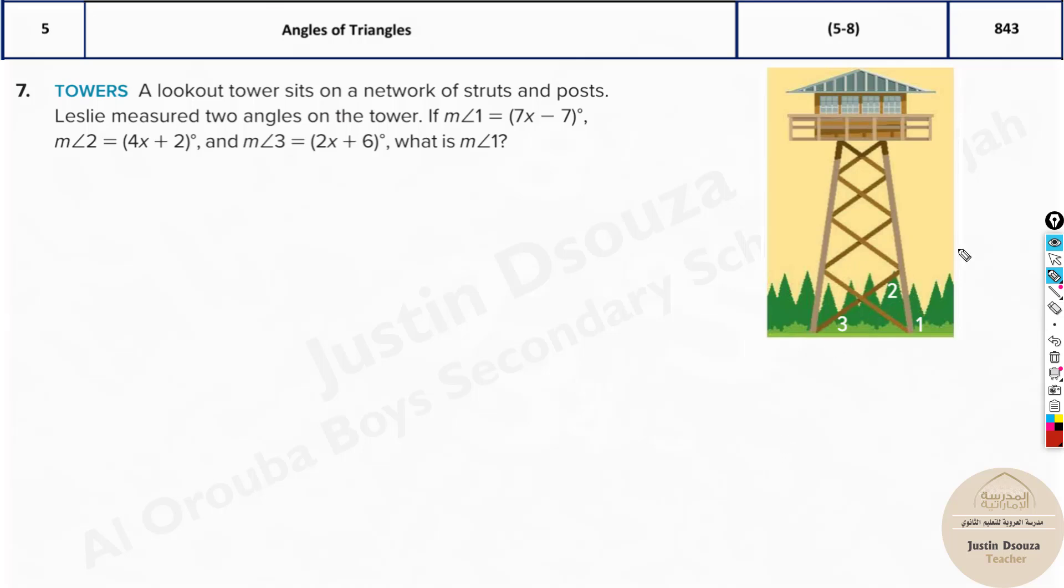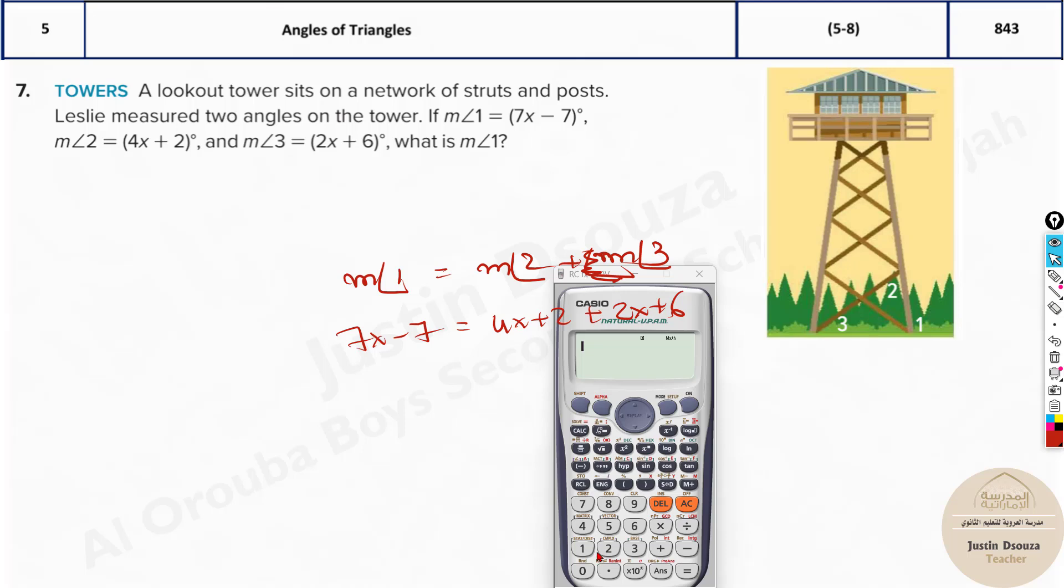Now it's all given in terms of x. So all you need to do is know the formula. Measure of angle 1 will be equal to the measure of angle 2 plus measure of angle 3. So we will substitute 7x minus 7. That will be equal to 4x plus 2 plus 2x plus 6. You can use your calculators and directly solve it up. All you need to do is type it out. 7x that is alpha x minus 1 minus 7 equals 4x plus 2 plus 2x plus 6. Shift and solve.